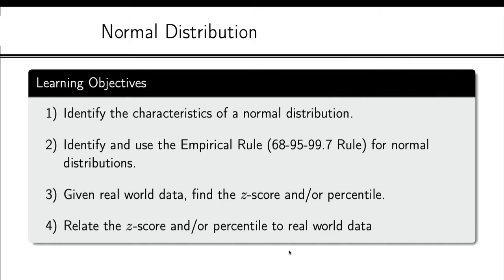We're talking about normal distributions, and this is just a way that some variables are distributed - meaning how many small values, how many large values, how many in the middle. We're going to talk about the normal distribution and different ways that we can talk about how a population is spread out over a normal distribution.